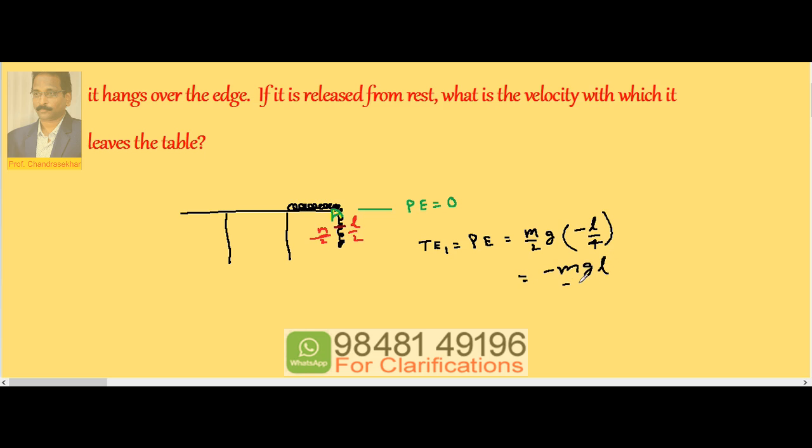Take it as equation one. Now the chain is released. As the chain passes, finally chain comes like this. Now total length of the chain l is hanging. Now this is the center of mass position.